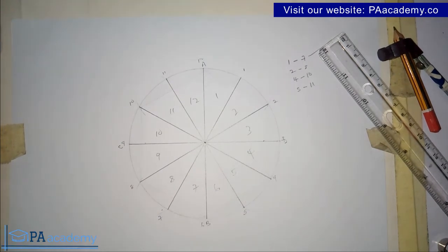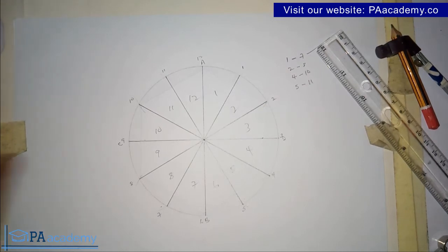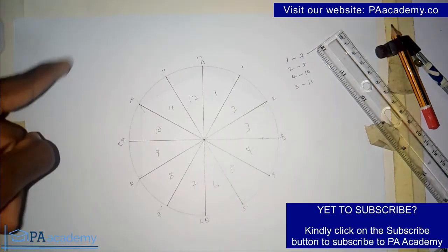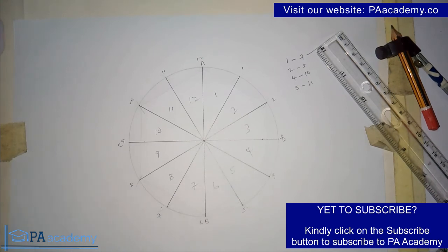This is how you go about this. In the next part of this video I'm going to show you another method of dividing a circle into twelve equal parts. That video will be appearing somewhere as this video is rounding up. If you find this video helpful, kindly give it a thumbs up. Make sure you subscribe to PA Academy.